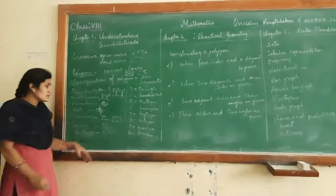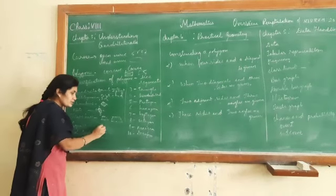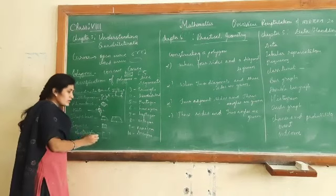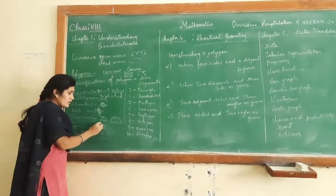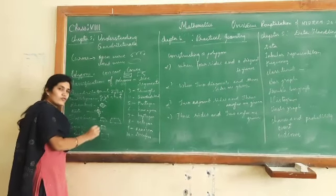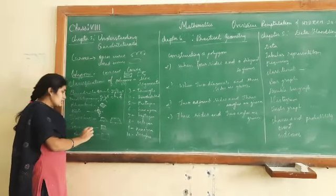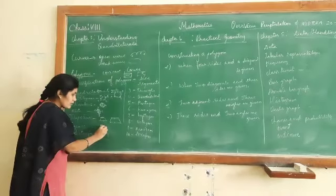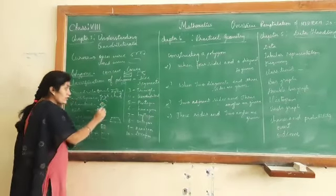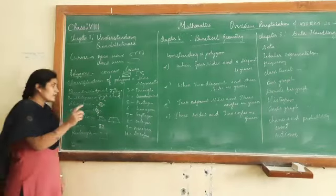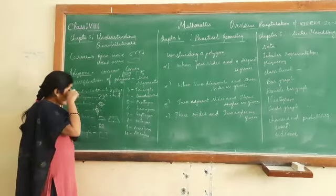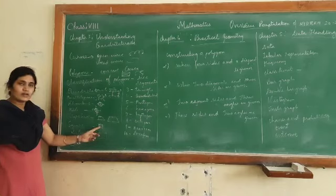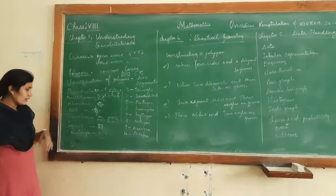Square: in a square all sides are equal, diagonals bisect each other, there are 4 vertices and 4 edges, and all angles are 90 degrees. In a rhombus, all angles are not 90 degrees - the angles have different measurements. In a square all angles are 90 degrees.